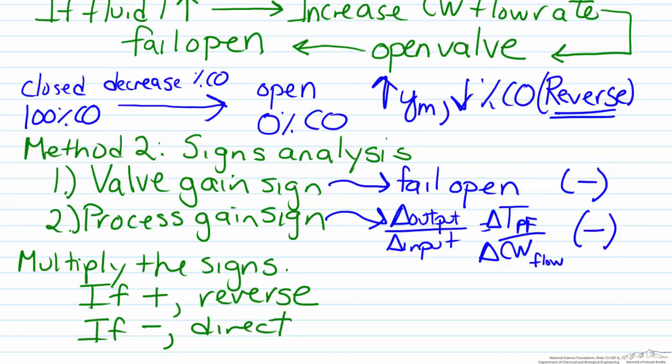If I use this methodology, I would multiply negative by negative, and that would get me a positive value, which again would predict a reverse acting controller, the exact same as we ended up with when we used the previous method.